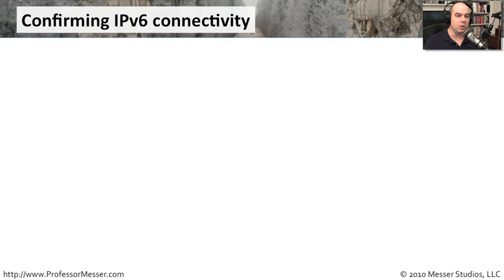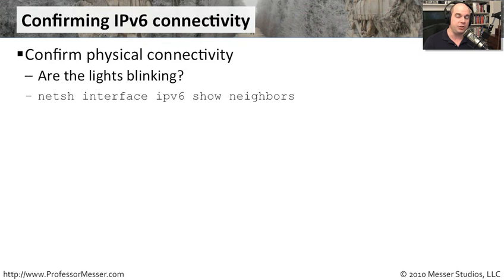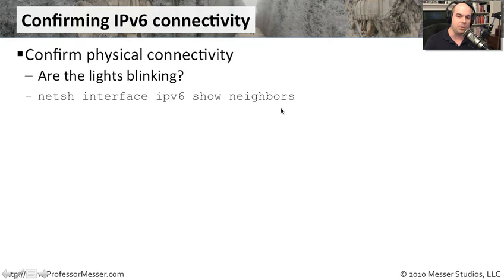Just like with IPv4, we want to confirm we can communicate via IPv6, and many of the same processes apply. First, check the physical connection — look for a link light on your Ethernet adapter and watch for blinking to confirm traffic. We can also run netsh interface IPv6 show neighbors, which shows other devices on the network and confirms we're connected properly.